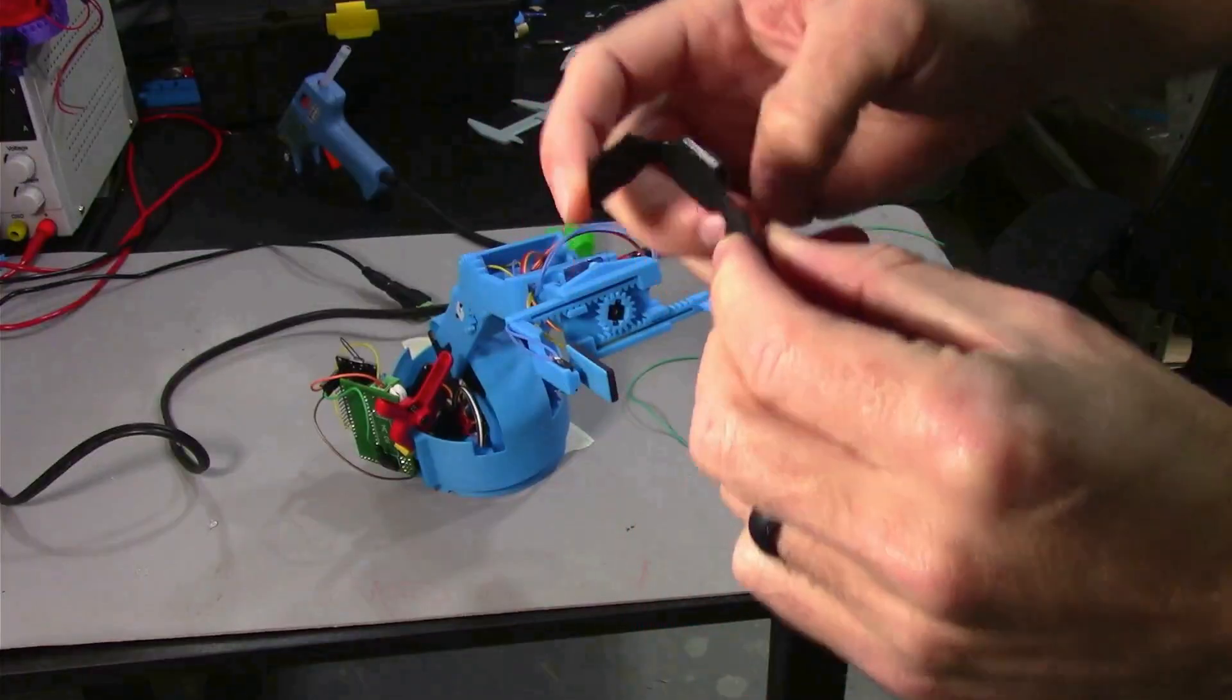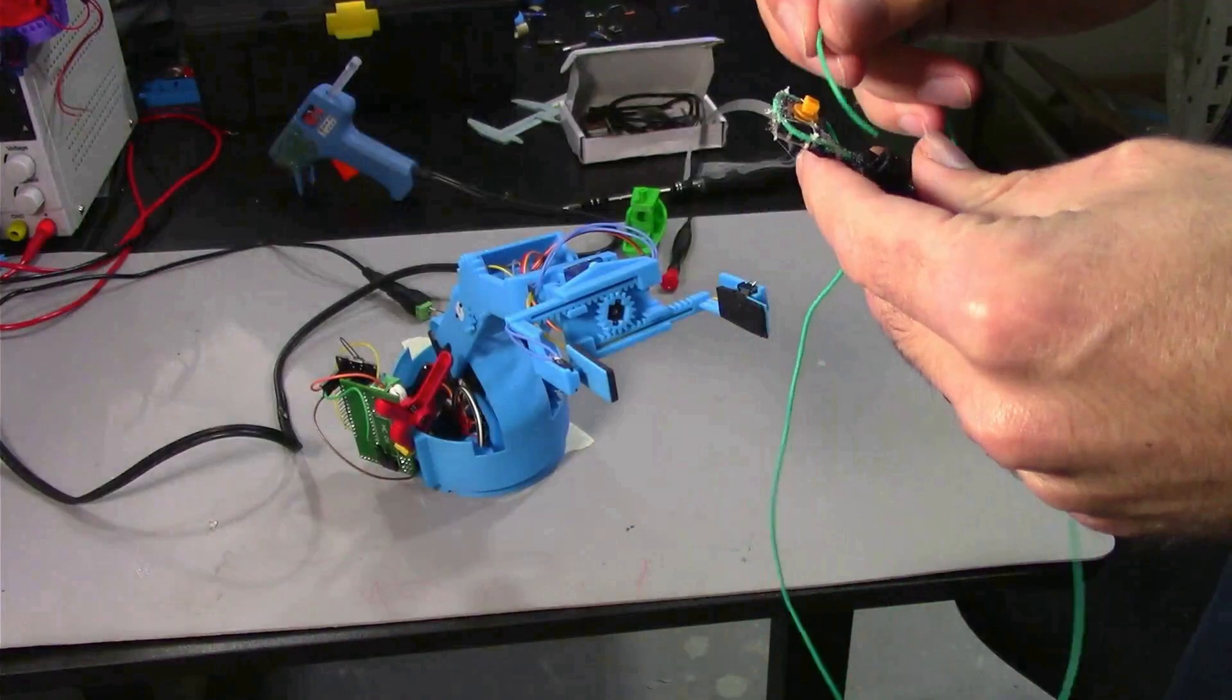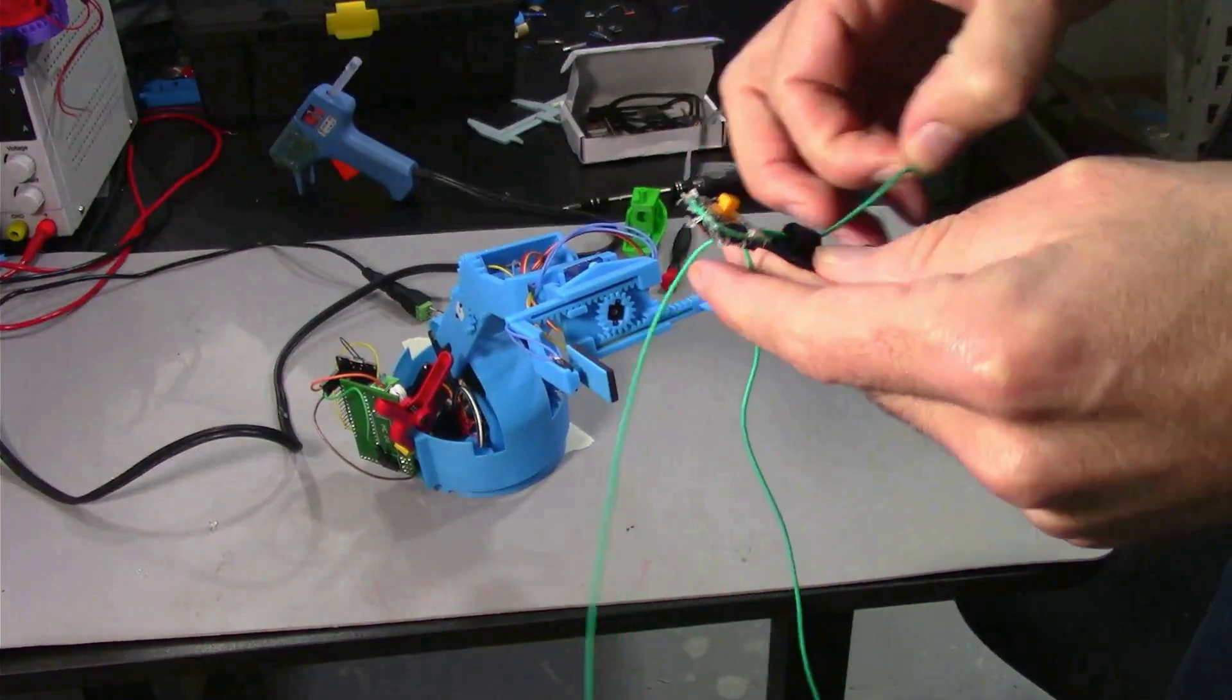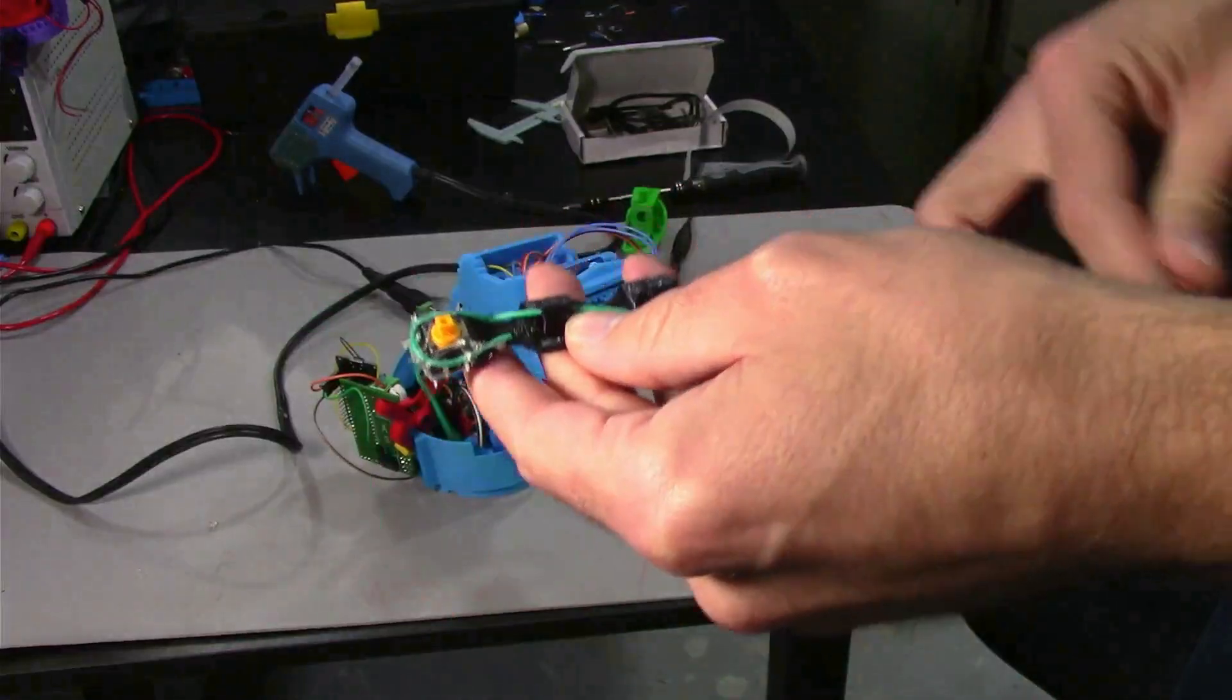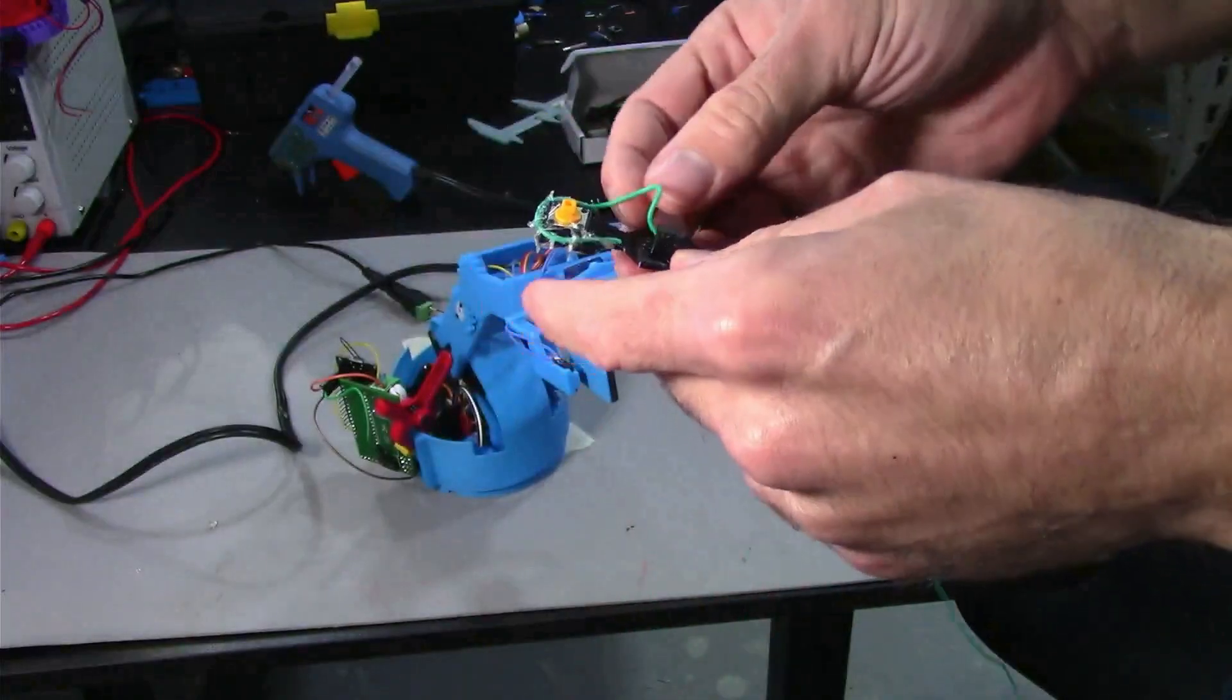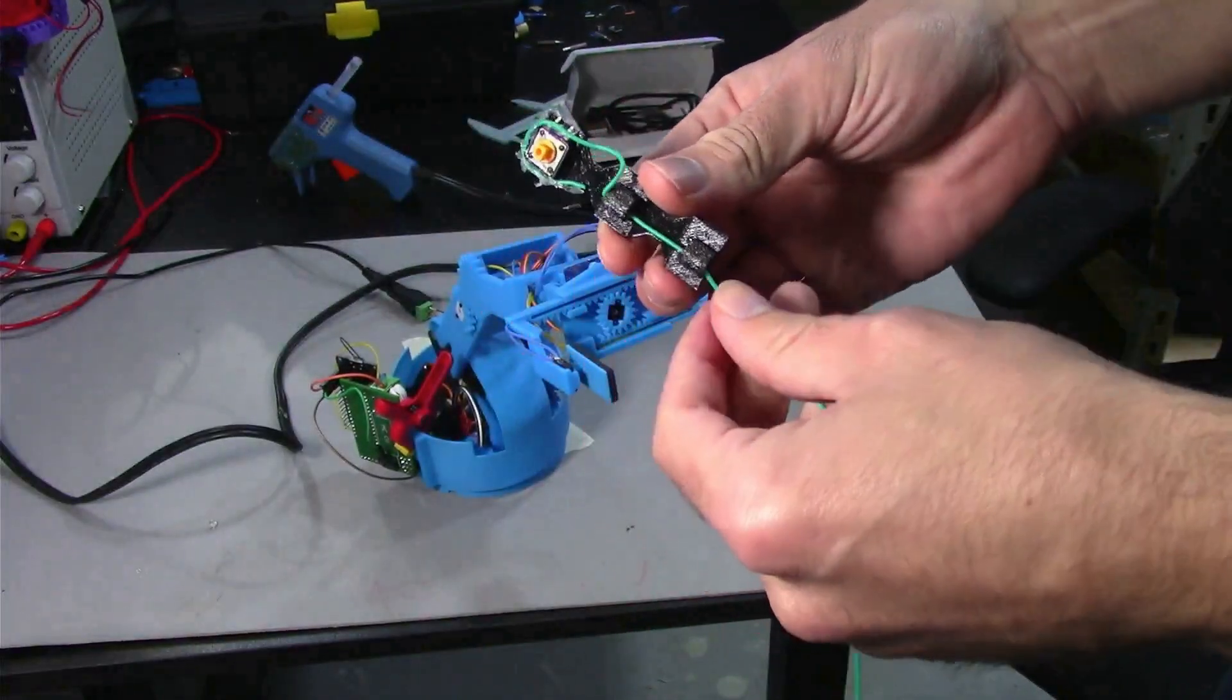I 3D printed this black flexible finger using Overture TPU. It has channels in it so I could run a wire through that resembles how the tendons work in a human hand. When I pull this green wire in the finger, it's going to bend it just like a human finger works.